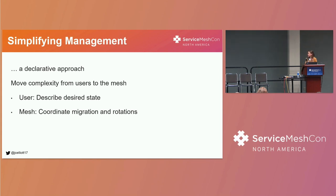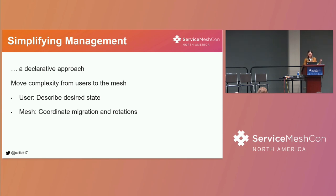Failures in any of these certificate management processes have high impact and can result in downtime. In order to simplify certificate management, OSM took a declarative approach. The main goal was to move the complexity from the users onto the mesh. The user is responsible for specifying their desired state of how certificates in the mesh should be used, and the mesh is responsible for making that desired state a reality — by coordinating provider migrations and certificate authority rotations.